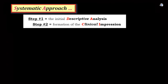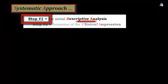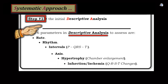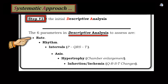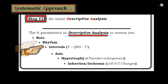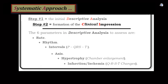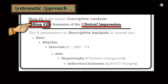Step one is easy. It's purely descriptive, without any analysis. One simply assesses in sequence the six key parameters of ECG interpretation, which are rate, rhythm, intervals, axis, chamber enlargement, and assessment of QRST changes. It is only after you have completed descriptive analysis that one should turn attention to specifics of the case at hand to formulate a clinical impression.